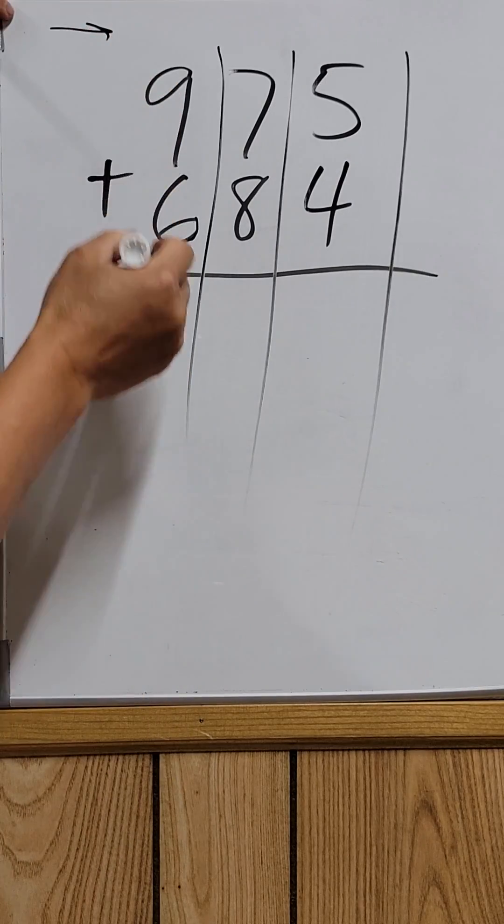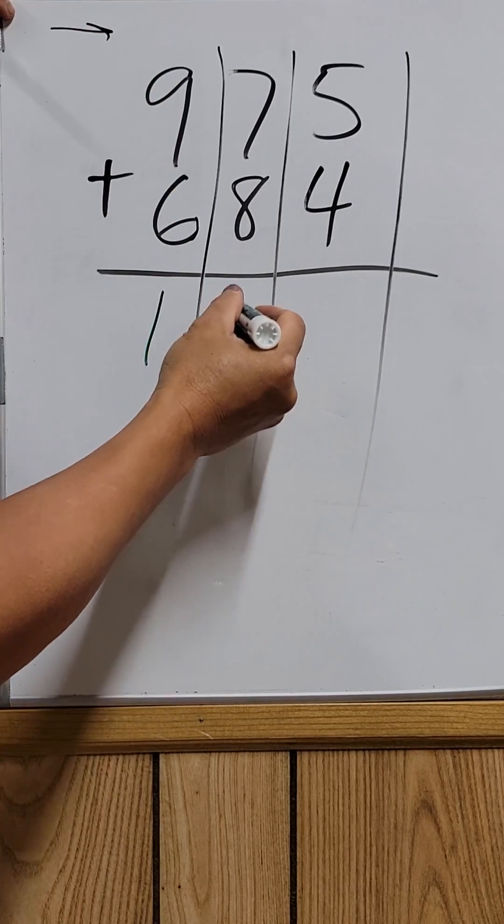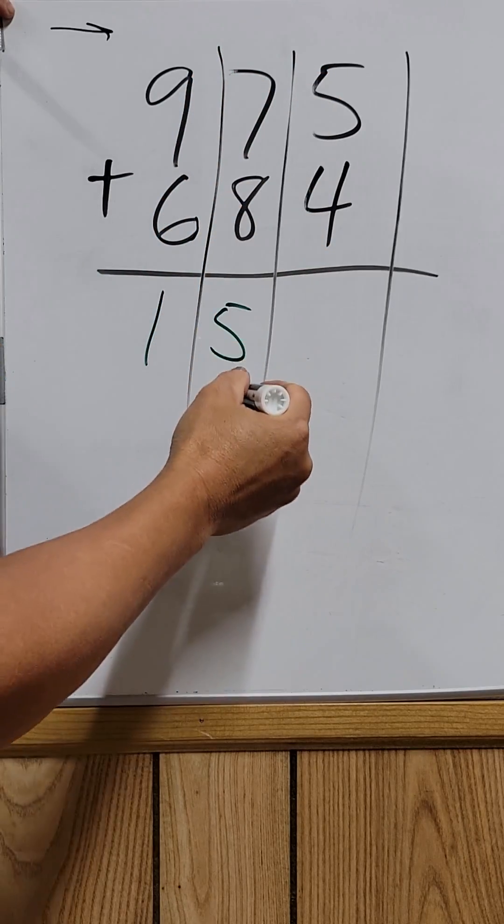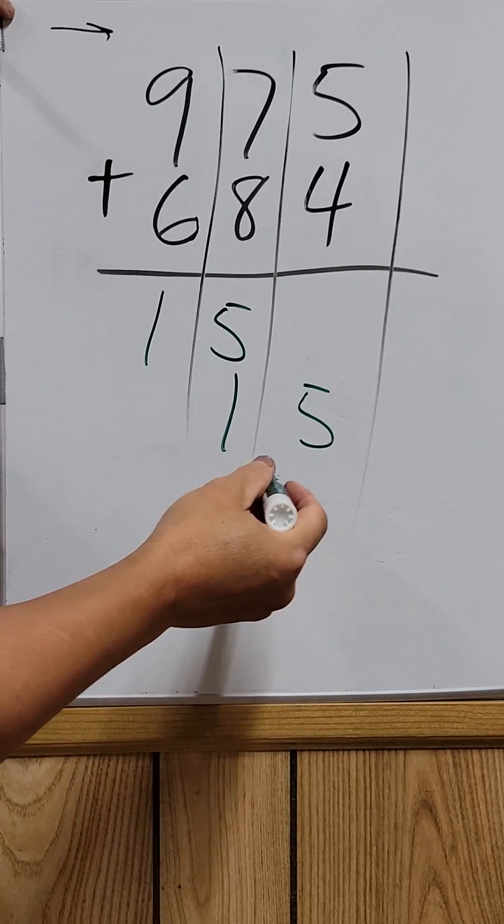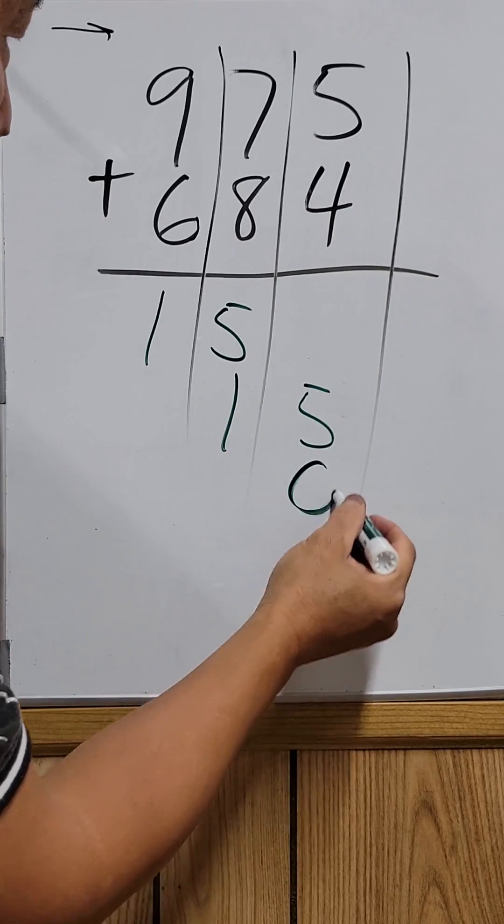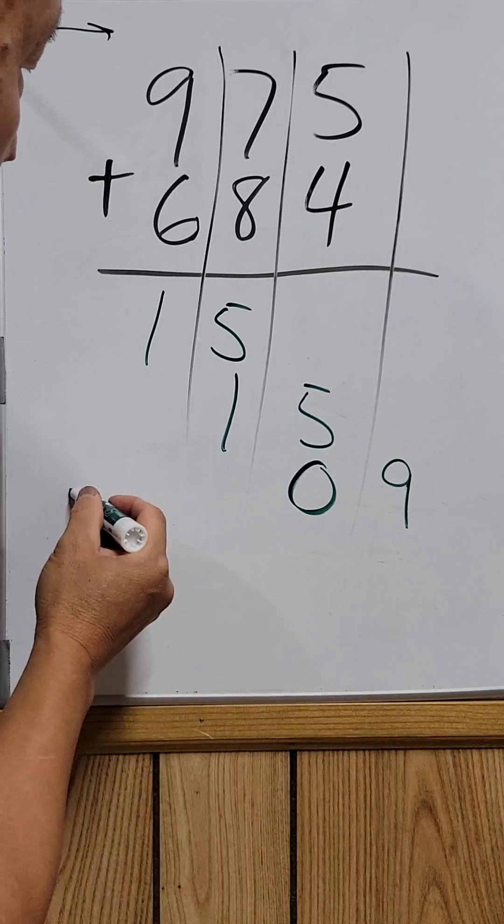So 9 plus 6 is 15. 7 plus 8 is 15. And then 5 plus 4 is 9. So you put 0 here and write the 9 right there.